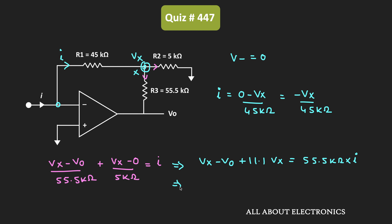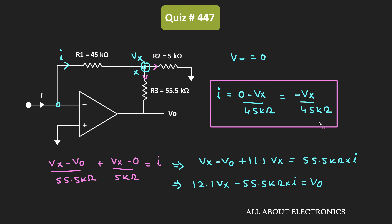From this we can say: 12.1·Vx − 55.5 kΩ × I = Vout. To find the transfer impedance, we need the ratio of Vout to I. Let us express Vx in terms of current I. From the earlier expression, Vx = −45 kΩ × I.